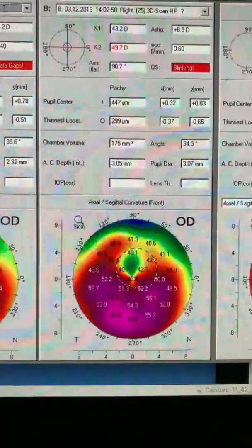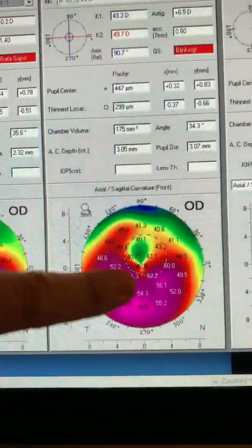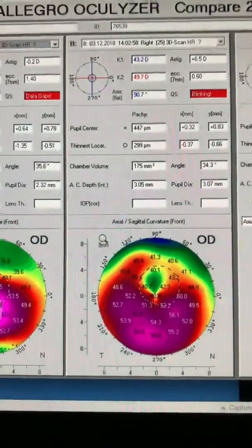Here in December, 11 months later, you can see a dramatic flattening. Our steepest K is in the 50s, low 50s. Cornea thickness is an artifact from the Pentacam, and it's not 299, it's about 380.